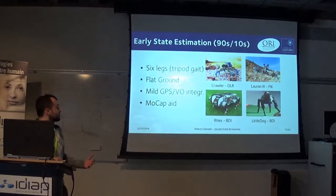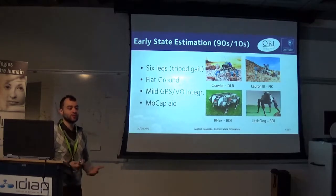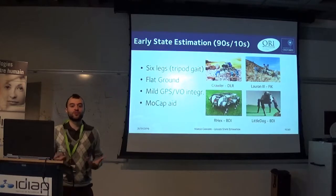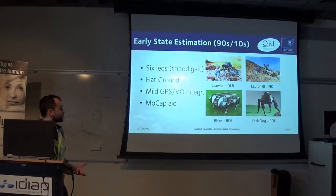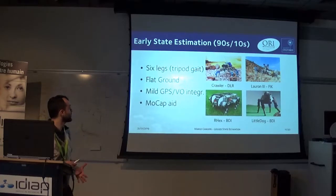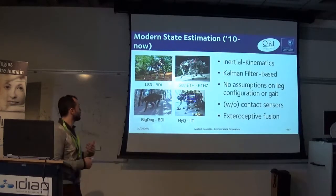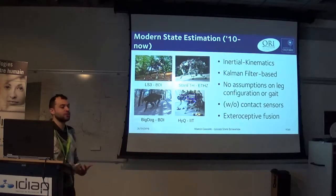Later on, some smaller platforms arose, but state estimation still had assumptions that are not general. Many hexapod robots give you the advantage of having certainty that at least three legs are on the ground, which is not possible for quadrupeds that trot, for instance. Some work with quadrupeds was aided by motion capture, so not the full state was recovered.